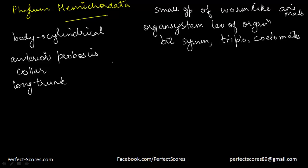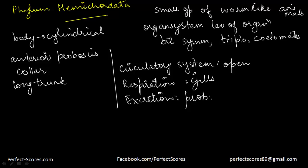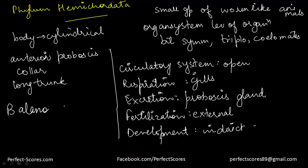The circulatory system is open, meaning there are no blood vessels. Respiration is through gills and excretion is through the proboscis gland. Sexes are separate and fertilization is external. Development is indirect. Some examples include Balanoglossus and Saccoglossus.